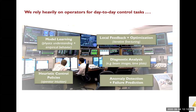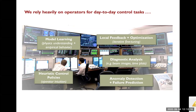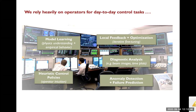When you talk to operators about the process they're using, they're doing sophisticated model learning — combining physics understanding with observed machine behavior. They do iterative fine-tuning, complicated diagnostic analysis looking at beam images and time series, and they learn heuristic control policies. However, they're typically only focusing on one small part of the accelerator at a time — for example, tuning the injector upstream separately from the main linac and separately from the undulator.